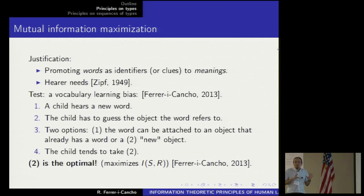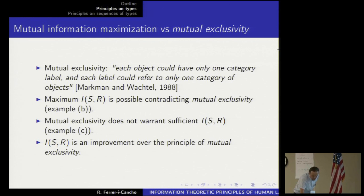Imagine the following setup. A child hears a new word. The child has to guess the object the word refers to. The child has two options. The word can be attached to an object that already has a word, or the word can be attached to a new object. This has been tested many times within a psychological experiment setup. The funny thing is that on the different variations of this simple experiment, the child tends to take option two, linking the new word to the new object. And indeed, this is something optimal according to the principle of mutual information maximization. This is important because we are going to use mutual information to explain the reasons of Zipf's law.